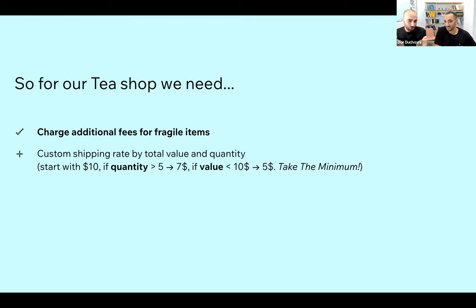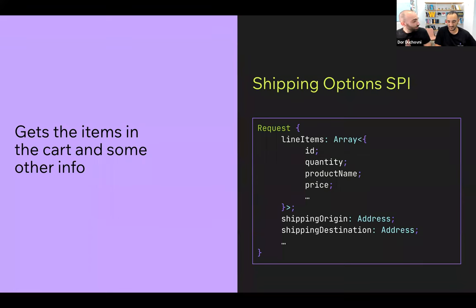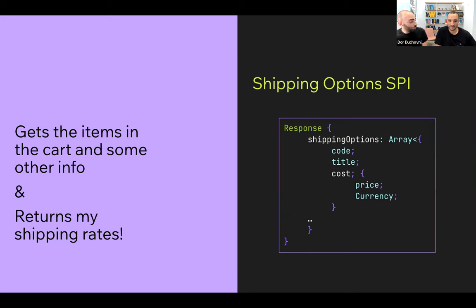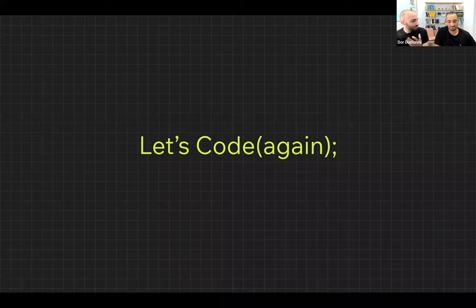We have two values and should take the minimum. For this, we're introducing the shipping rates SPI. Almost exactly like the additional fees, you implement a function, receive cart data, line items, shipping origin address, and shipping destination address, and return a list of shipping options to present to the buyer in the cart and checkout — with code, title, cost, and rate.